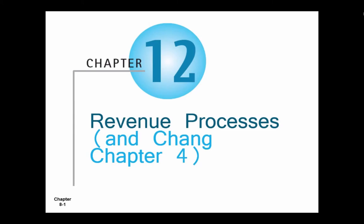Chapter 12 slash 4 will be revenue processes, 13 slash 5 will be procurement processes, and then we'll just do some of the other processes after that.